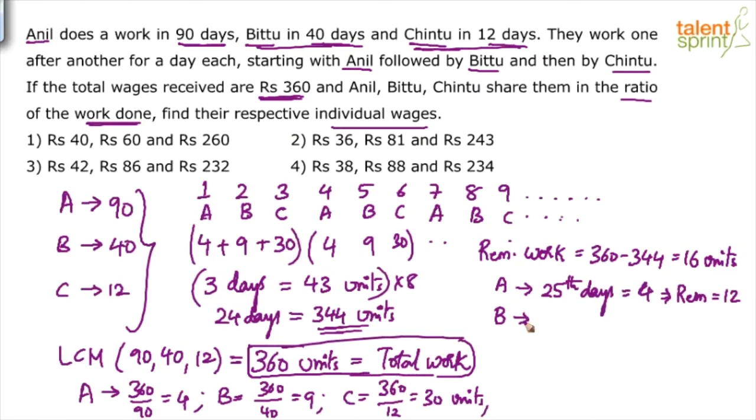B comes on 26th day. How many units can B finish in 1 day? 9 units. So out of remaining 12, 9 is over. Still there are a few units left out, 3 units. Now who will do this 3 units? C will come on 27th day. But understand C's capacity is to do 30 units a day. So to do 3 units, he will take only 1 tenth of the day. C will do the remaining 3 units basically in 1 tenth of the day.